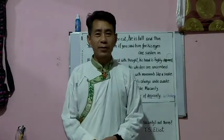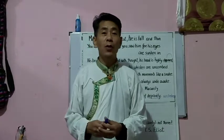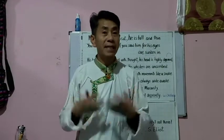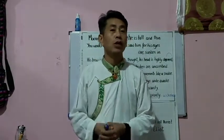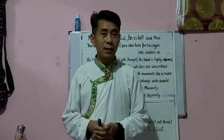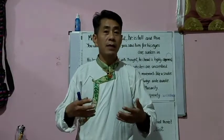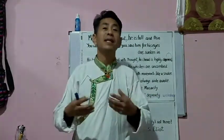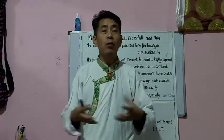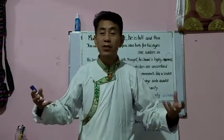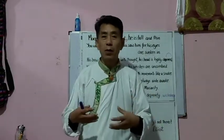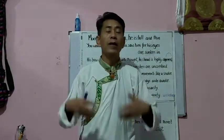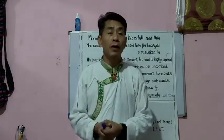Good morning and Tashidelek students. I'm going to continue the poem 'Macavity the Mystery Cat' by T.S. Eliot. In my previous lesson we read some parts of the poem — two stanzas — and today I'm going to do the remaining stanzas. The poem is quite lengthy but in our class 8 textbook we have a short version, and whatever we have in the textbook we are going to cover.